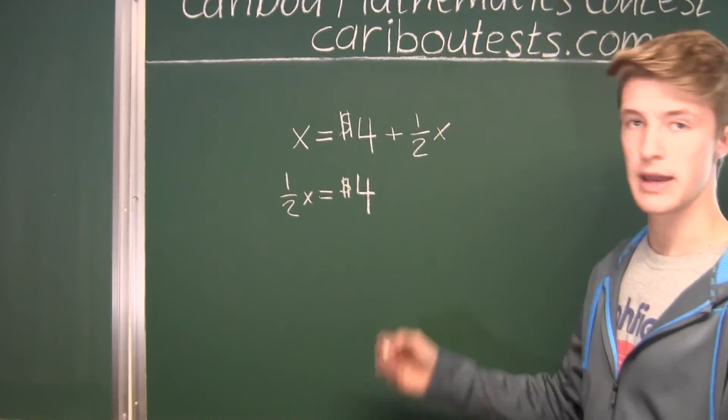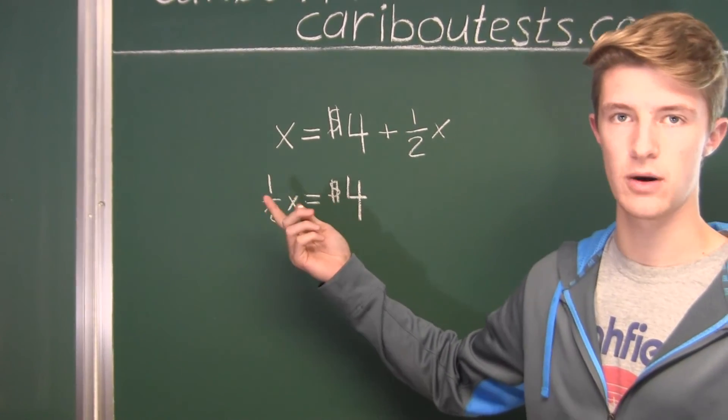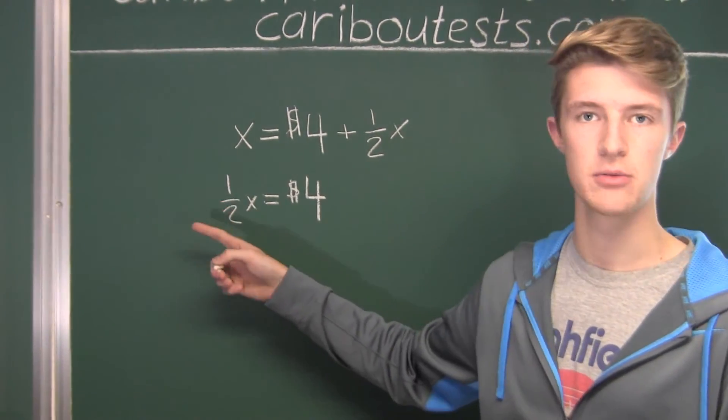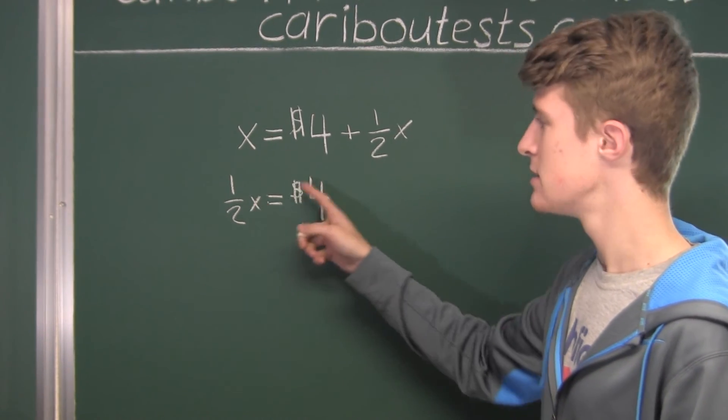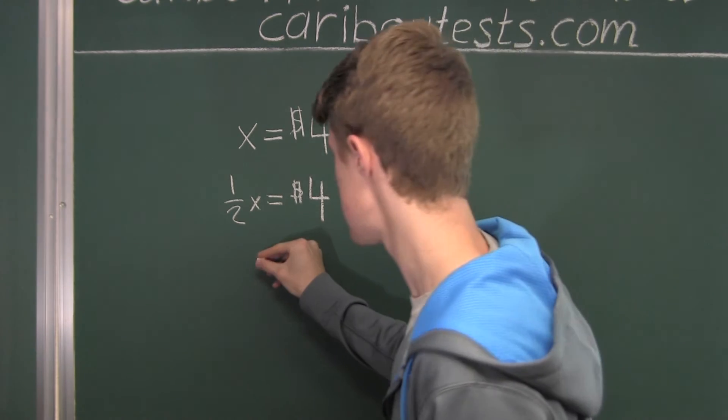Okay. And finally, since we want 1x, we want a full x, because we want to find out the full price of the frisbee, we have to get rid of this denominator by multiplying both sides by 2. Well, multiplying this by 2 just gives us x,